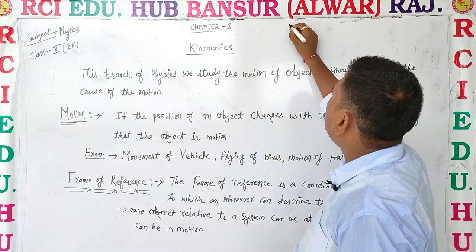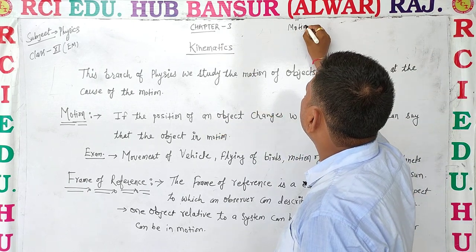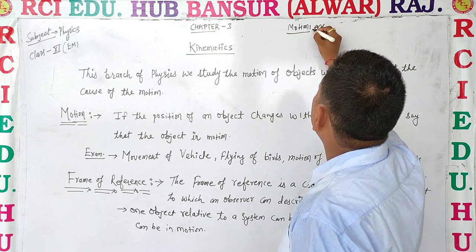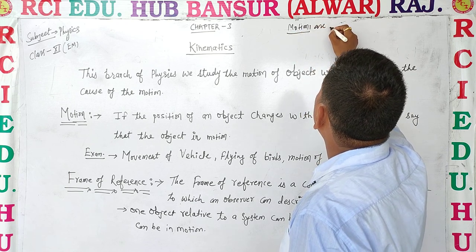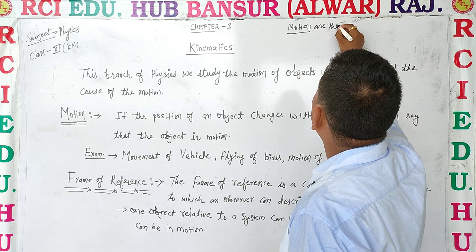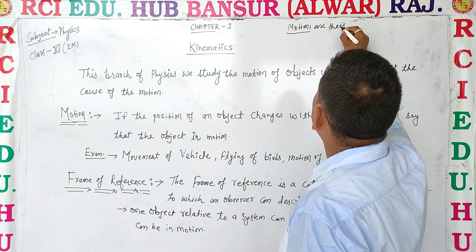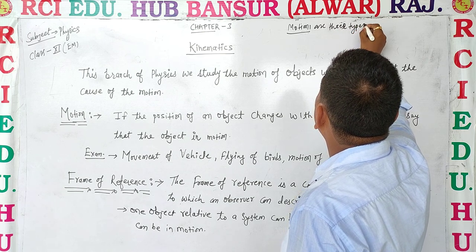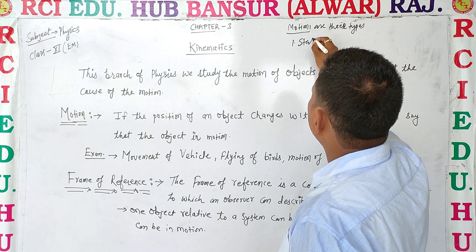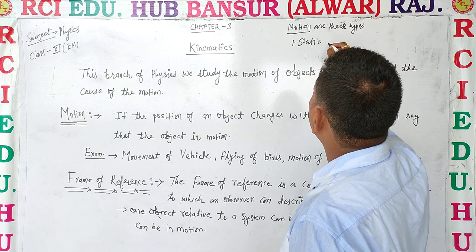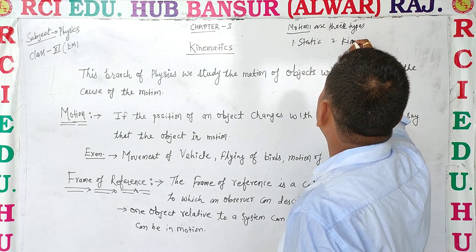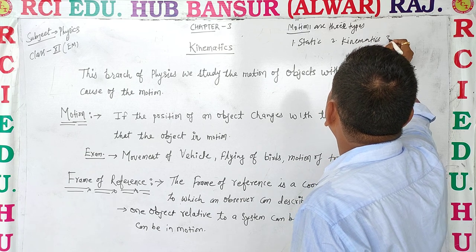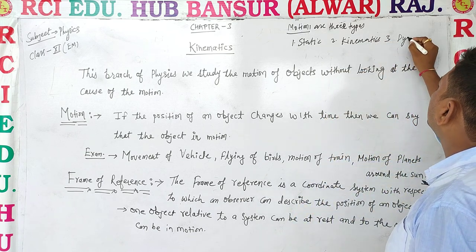Motion is 3 types. First is Static. Second is Kinematics. And third is Dynamics.